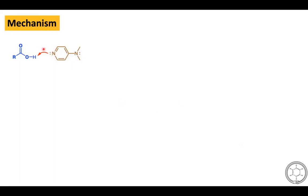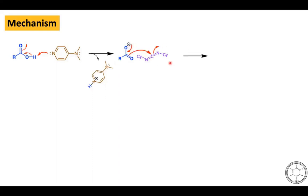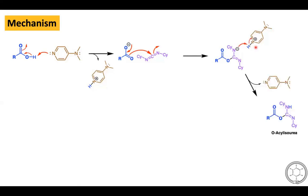Next we move on to the mechanism. Initially, carboxylic acid reacts with DMAP. The DMAP nitrogen contains a lone pair of electrons that readily abstracts the proton from the carboxylic acid, generating the corresponding carboxylate ion as well as protonated DMAP. That carboxylate ion further reacts with DCC to generate a corresponding intermediate, which then abstracts the proton from protonated DMAP, kicking off DMAP and generating the O-acyl isourea intermediate.